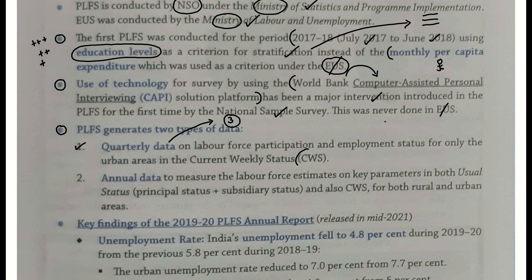Aur yeh Current Weekly Status par generate kiya jaata hai — UPS, CWS, CDS mein se. Toh yeh current weekly status par quarterly data nikalaa jaata hai — labor force participation status par aur employment status par. Lekin yeh wala sirf urban areas ke liye nikalaa jaata hai.